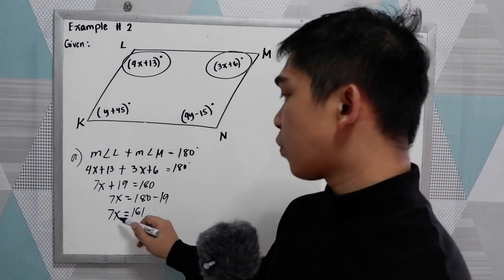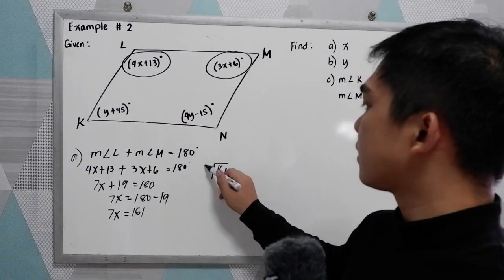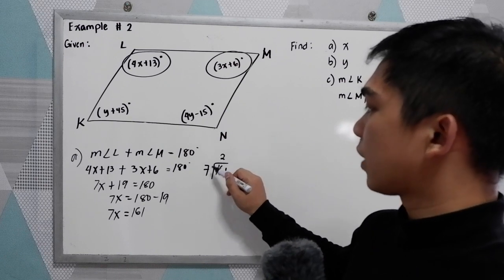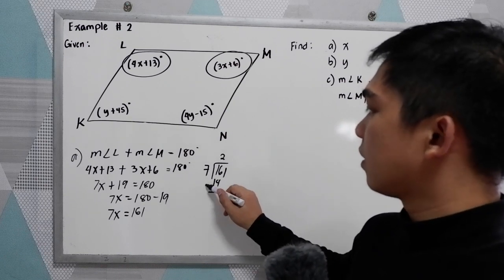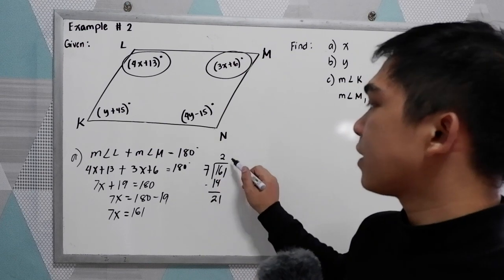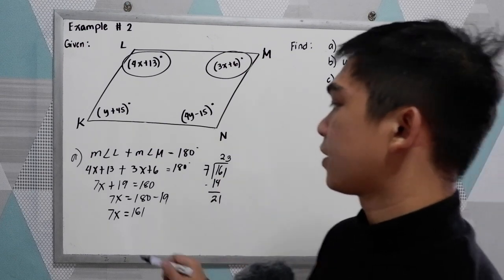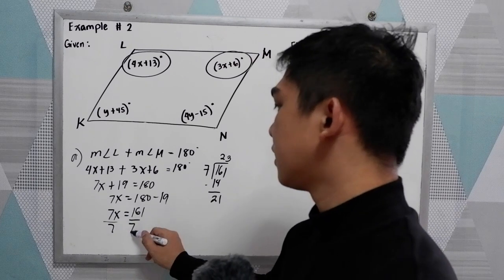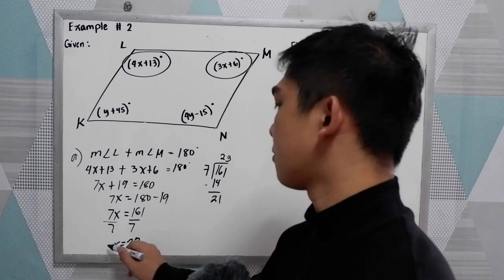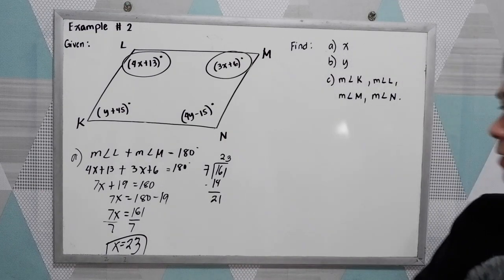Dividing both sides by 7: 161 divided by 7 equals 23. So X equals 23.